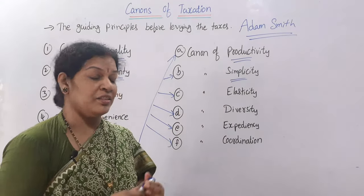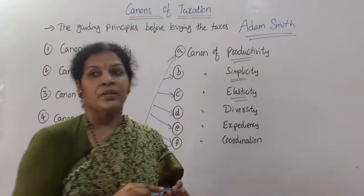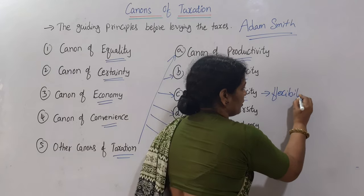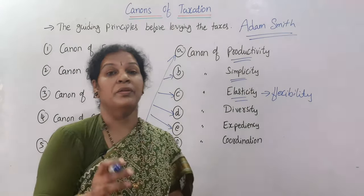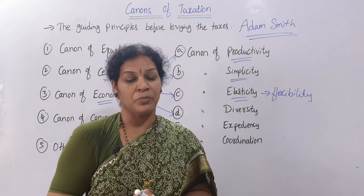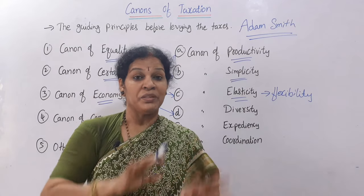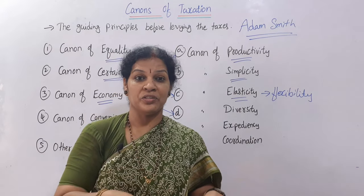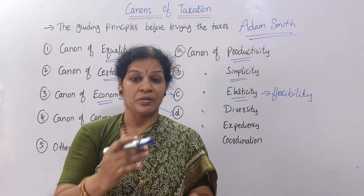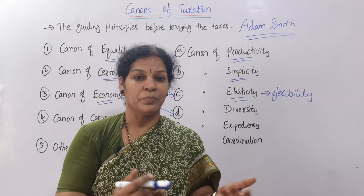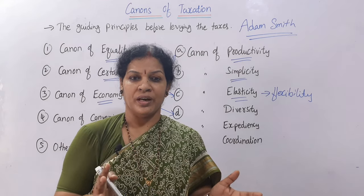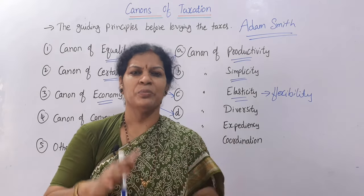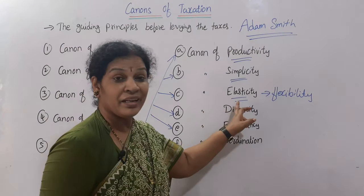The next canon is the canon of elasticity. This means there should be some flexibility in the tax policy. A policy that has been framed can be changed according to need — according to the environment, the situation, whether economic, social, or any other kind. For example, if unexpected incidents like floods or earthquakes occur, you cannot charge too much tax at that time. So flexibility is essential, and that is what the canon of elasticity calls for.